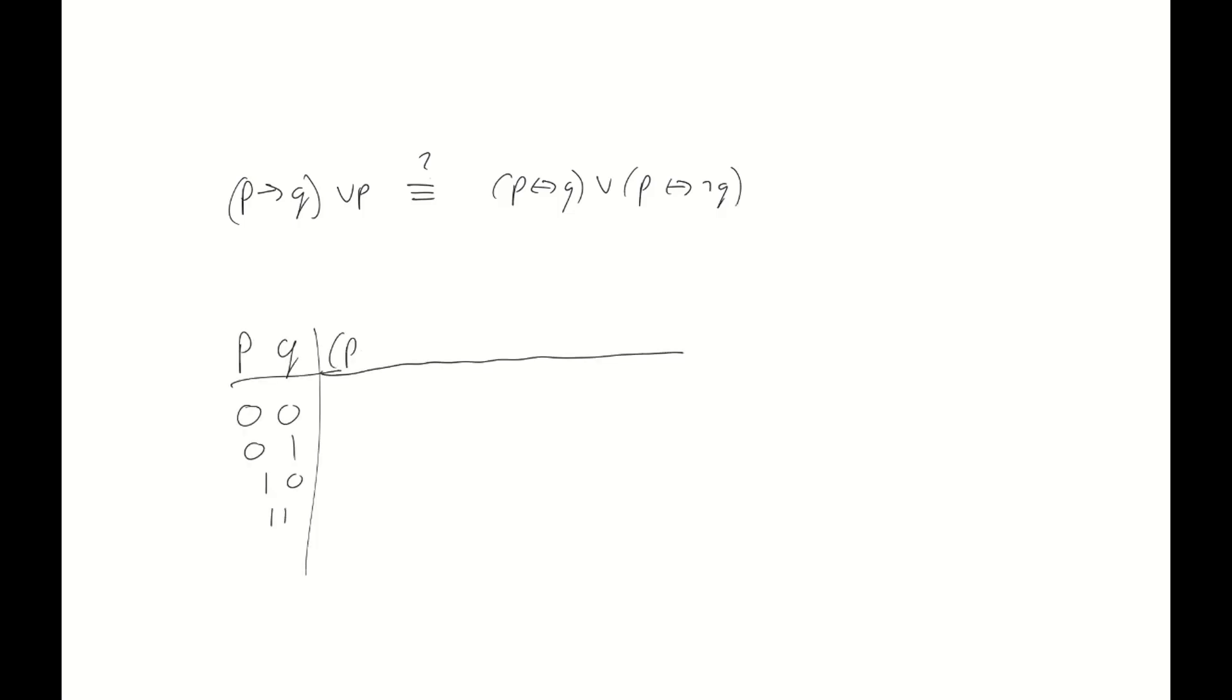So again we use a truth table and again I'm going to speed up the creation of these truth tables. Similarly to the first set we again find that although the truth tables are a bit larger, if we take a look at the final column, the one that would normally contain our final answer, we find that these two are indeed the same and thus again these two are equivalent.